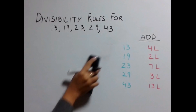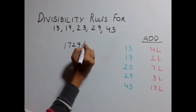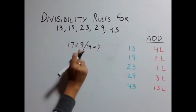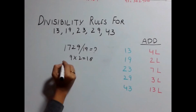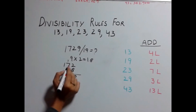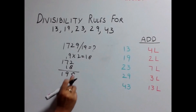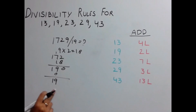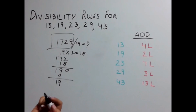Let's check a bigger example: is 1729 divisible by 19? For 19, multiply the last digit by 2. So 9 × 2 = 18. Add 18 to the remaining number 172, giving 190. Again, multiply the last digit 0 by 2, giving 0. Add 0 to the remaining number 19, giving 19. Since 19 is divisible by 19, this number is also divisible by 19.